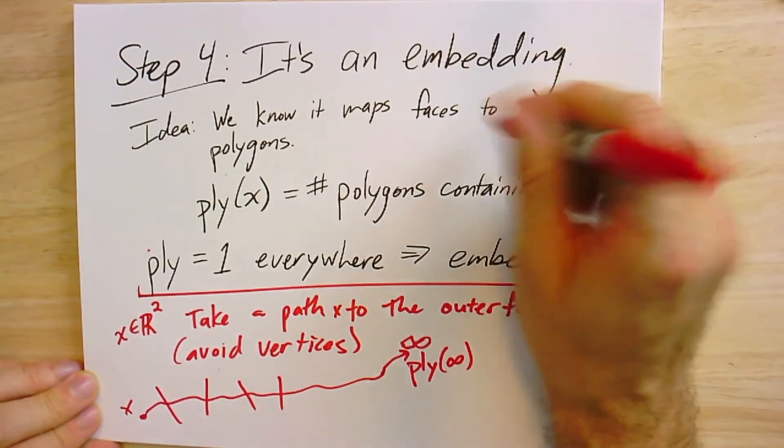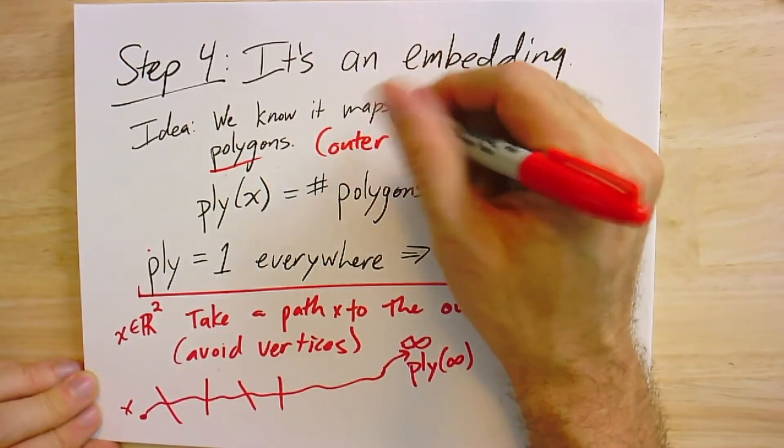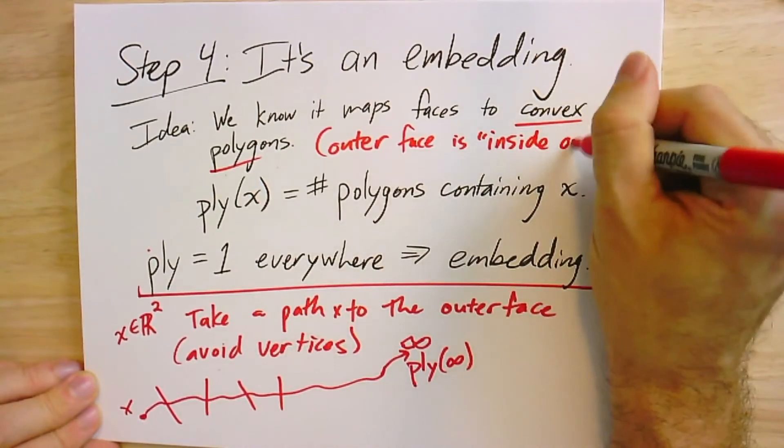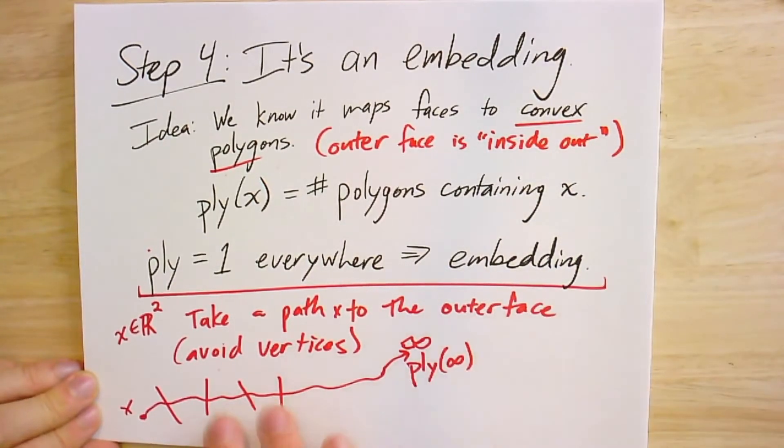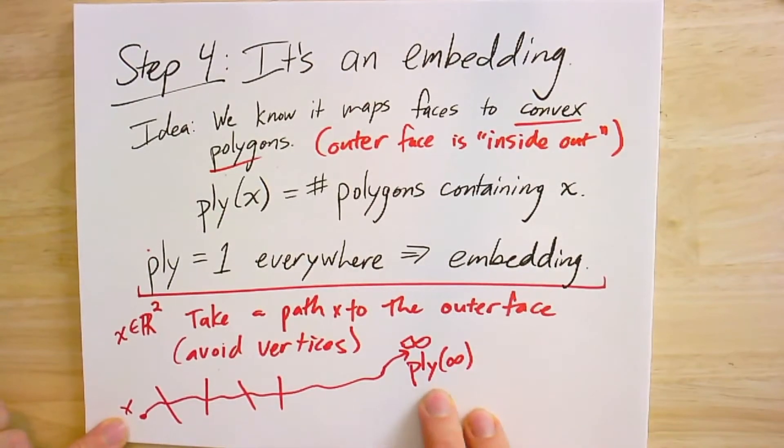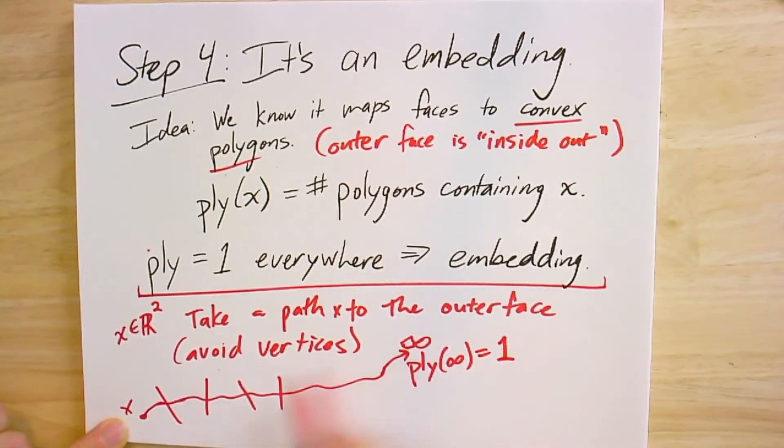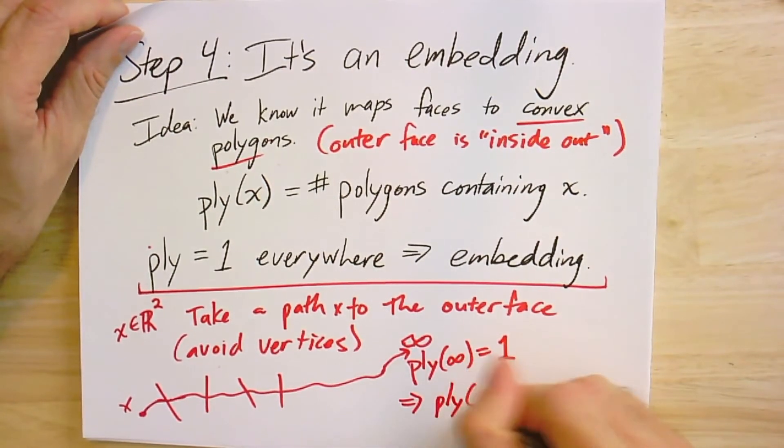The outer face is the complement of a convex polygon - everything but one convex polygon. Once you get far enough away, you're outside all the other polygons. So the ply at infinity is one. Along the whole path, you never change ply - the only time you could change is when entering or leaving a polygon at an edge. But we already saw that at every edge, exactly two faces meet.